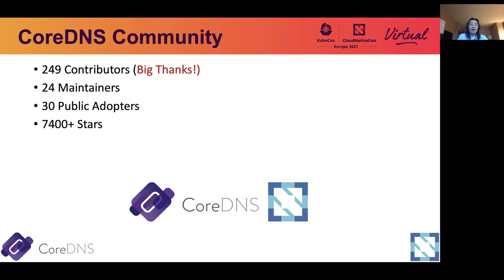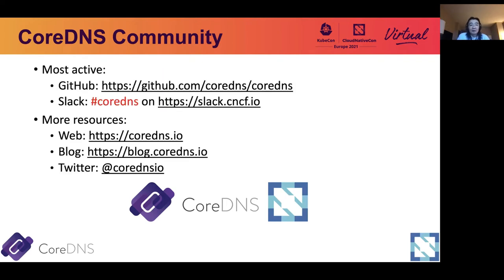We also have about 7,400 stars. It's a very important number and we hope this number can grow continuously. So if you haven't done so, I would really encourage you to star CoreDNS on GitHub — this can help the community. If you're looking for help in CoreDNS, there are several places. GitHub is the most active one. There is also a Slack channel that's part of the CNCF Slack. We also have a web page, a blog, and you can subscribe to the Twitter handle CoreDNS.io.